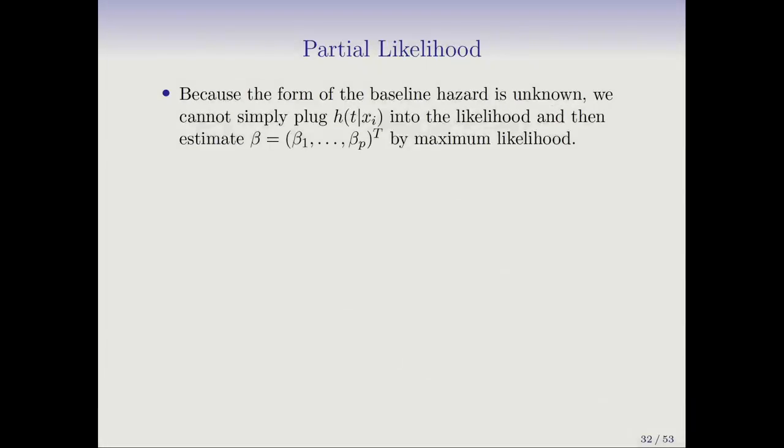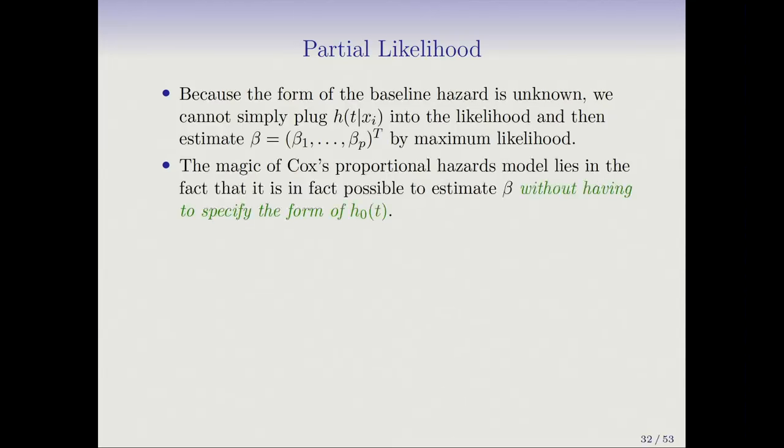Okay, so suppose we have the model. How do we estimate the weights, the coefficients beta? That's the question. Well, this was Cox's really ingenious idea, this idea of partial likelihood. And the magic of it is they don't have to specify that baseline hazard, which we've been saying so nicely as unspecified. One does not have to specify it and still get a good estimate of the coefficients beta.